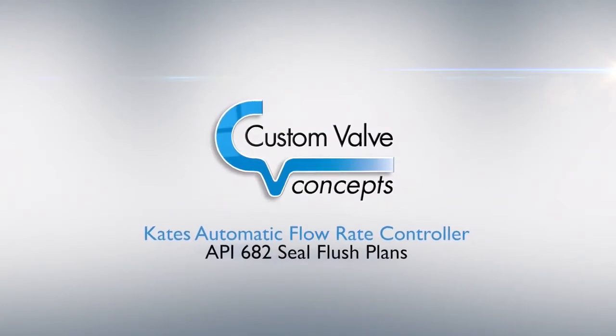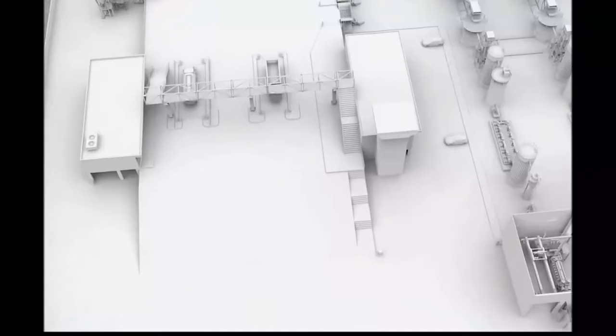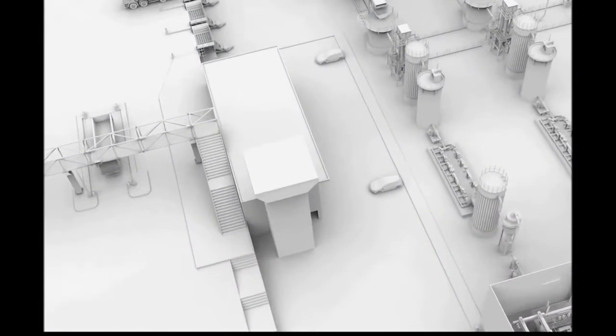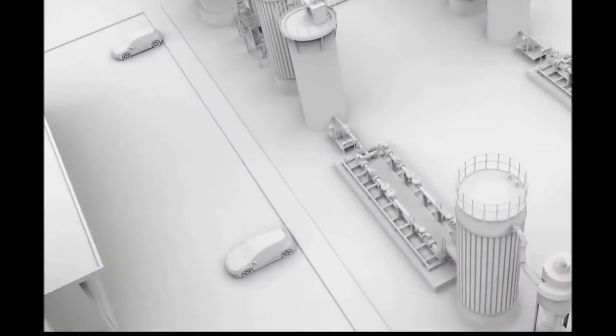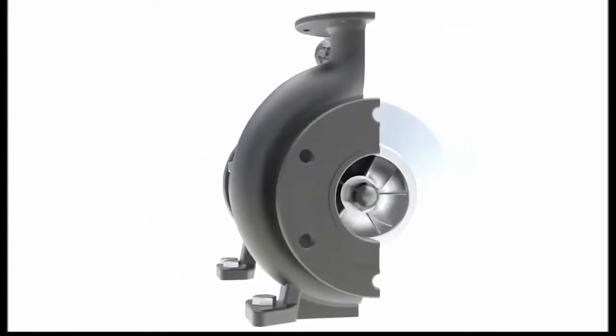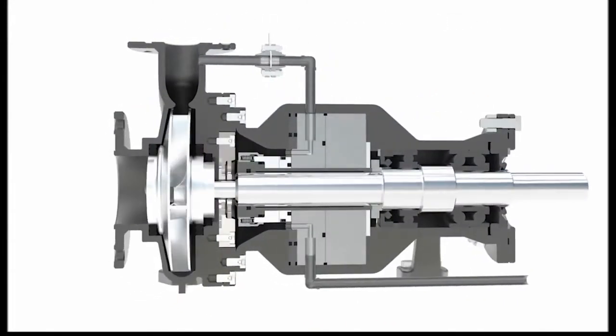The Gates automatic flow rate controller continues to be the most effective flow control choice for mechanical seal flush systems in both the oil and gas and petroleum industries. Its operating principles allow a fully mechanical valve to maintain a set flow rate regardless of any pressure variations in the system.